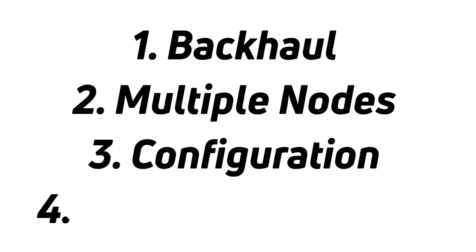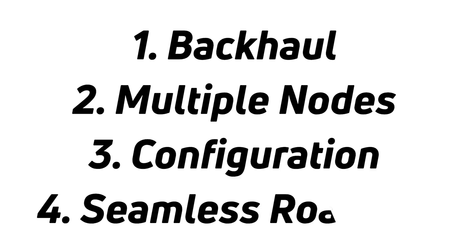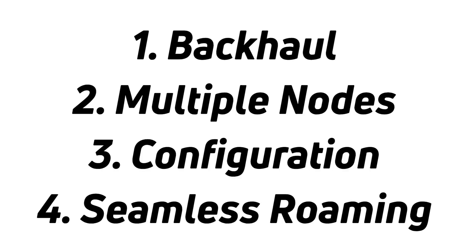The fourth important thing about mesh networking — and it's true this is only found in some types — is fast roaming: the ability to switch from one node to another without any interruption. So let's talk about those four points in greater detail, starting with the backhaul.